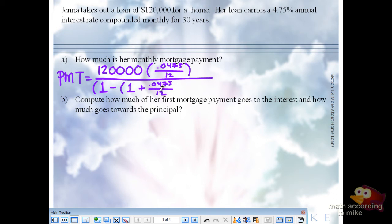Over 1 minus parentheses 1 plus R over N raised to the negative 12 times, and this is a 30 year loan. Which means that N would be negative 360.